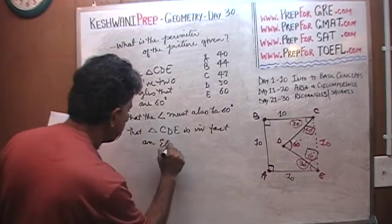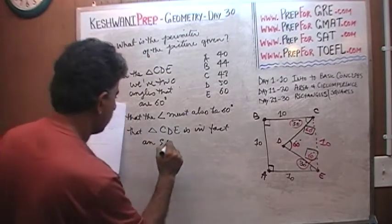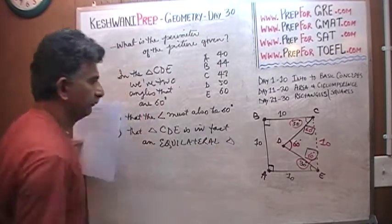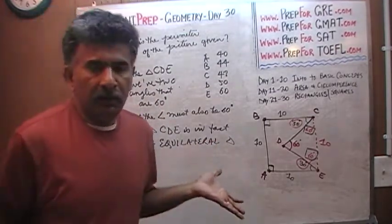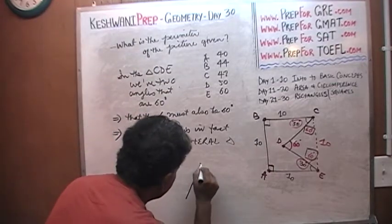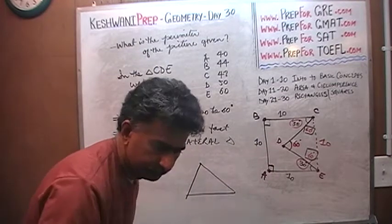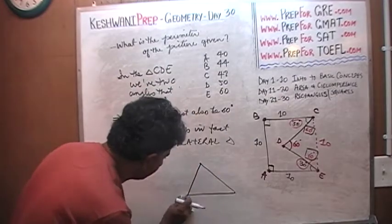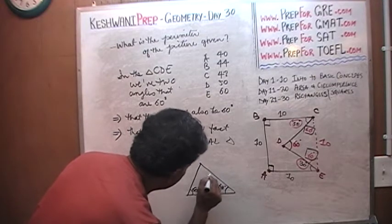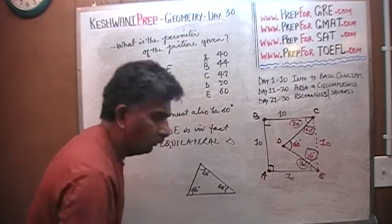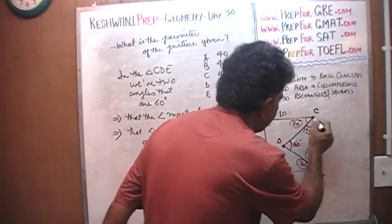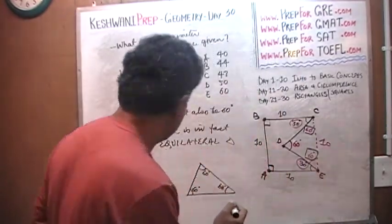An equilateral triangle is where all angles are equal and all sides are equal. If we are told that this is 60 degrees, and if this is 60 degrees, and if this is 60 degrees, if all the angles are equal, then all the sides must be equal too. And we already know that CE is 10.